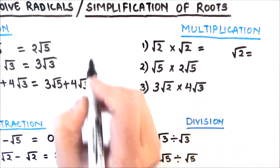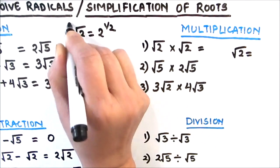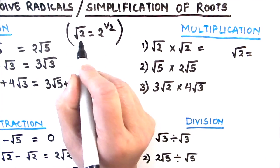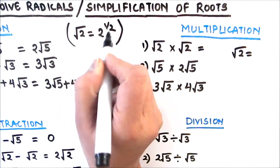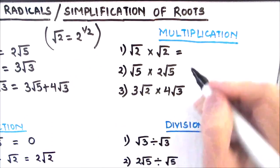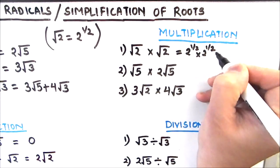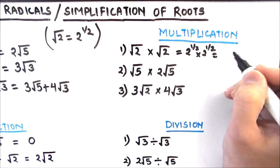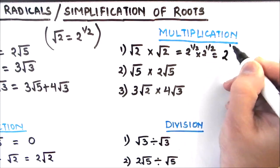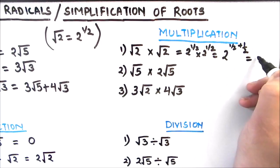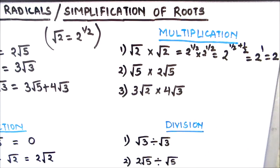Let us now move on to the multiplication of roots. Before we go ahead, root 2 is equal to 2 to the power half. Root 2 and 2 to the power half are the same — when we write it in exponent form, the power of 2 is half. So we can write root 2 times root 2 as 2 to the power half times 2 to the power half. Using the rule of exponents, when bases are the same the powers get added: 2 to the power half plus half equals 2 to the power 1, which equals 2. So root 2 times root 2 equals 2.